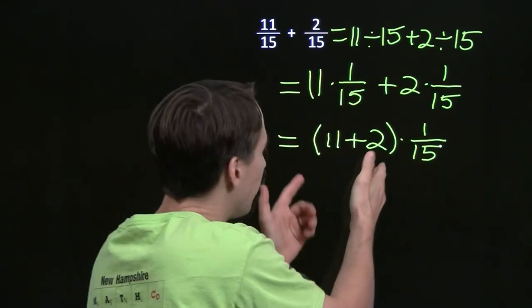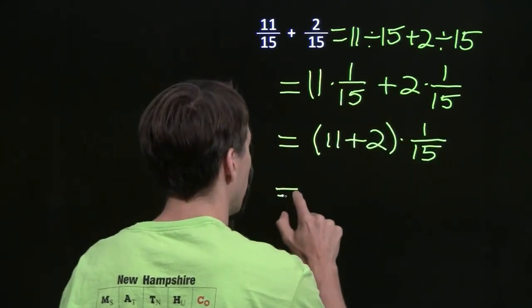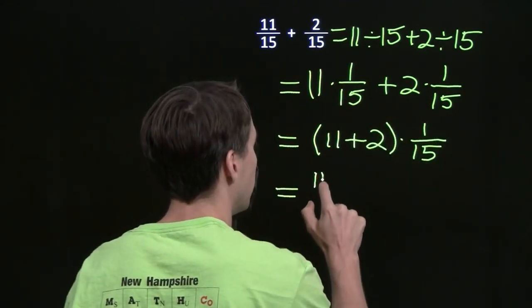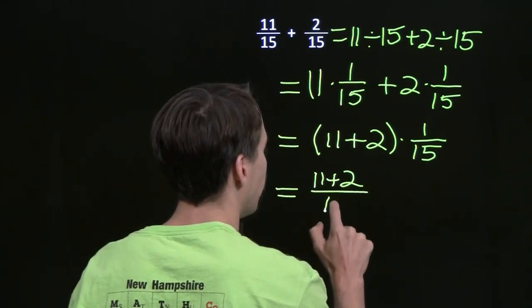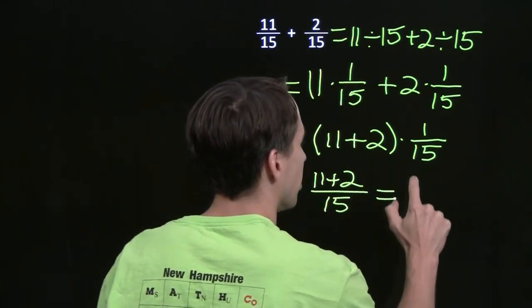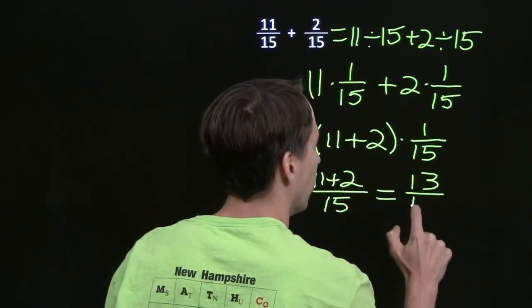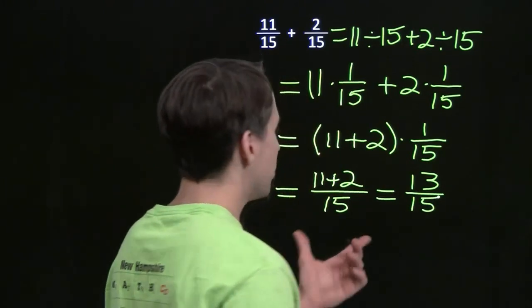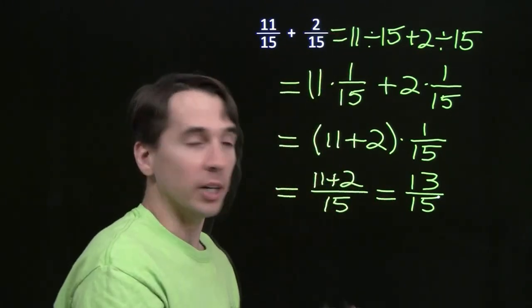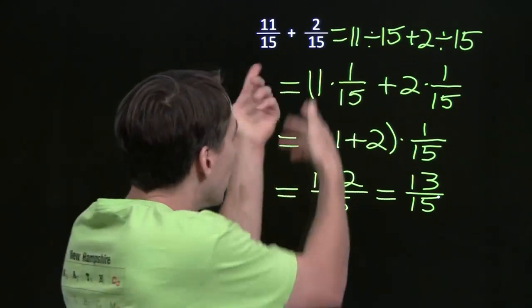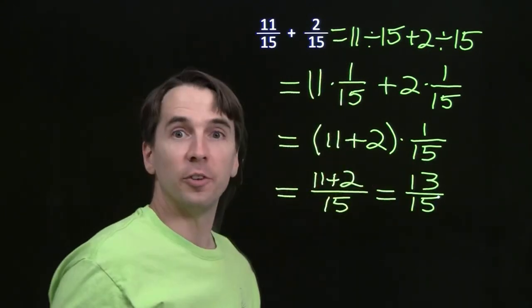When we multiply these out, 11 plus 2 — that sum times 1 — is just 11 plus 2. So you get (11 plus 2) over 15, and of course that's just 13 over 15. All we did was add the numerators and keep the denominator the same — we get 11 plus 2, all over 15.